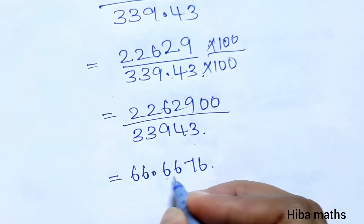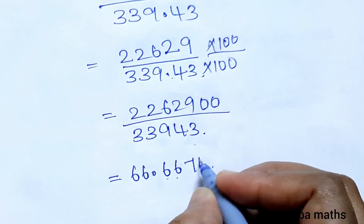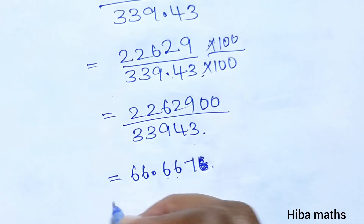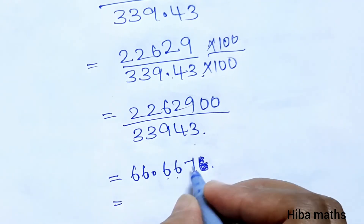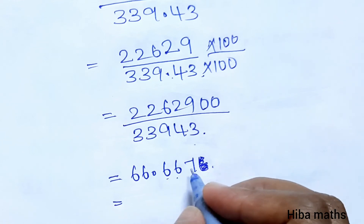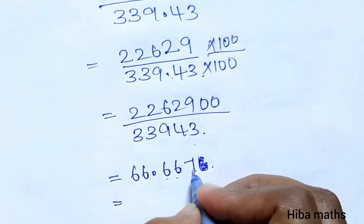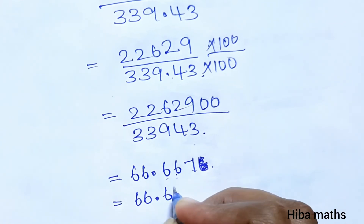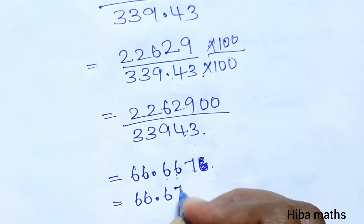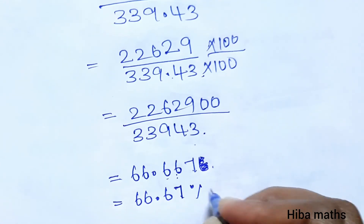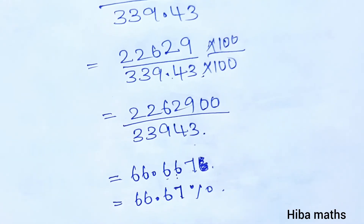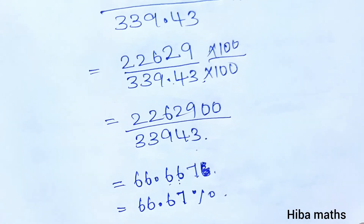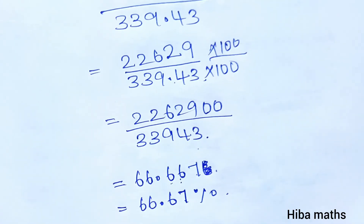We stop at two decimal places and round off. The answer is approximately 66.67%. That is the final answer. Thank you so much for watching.